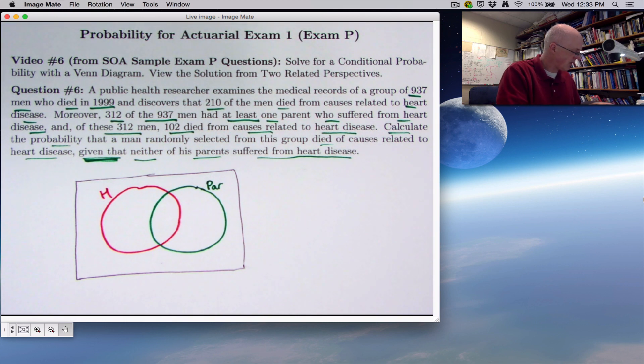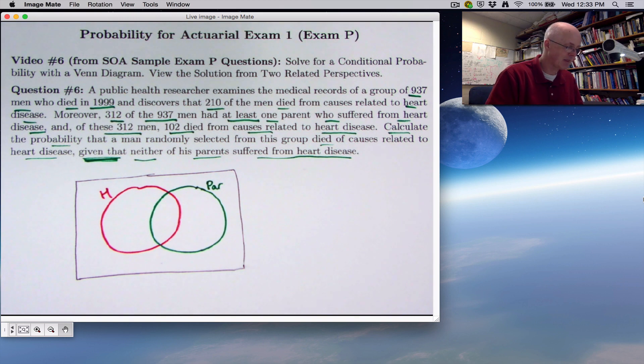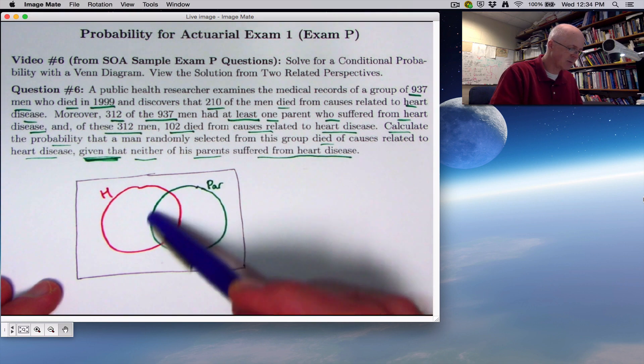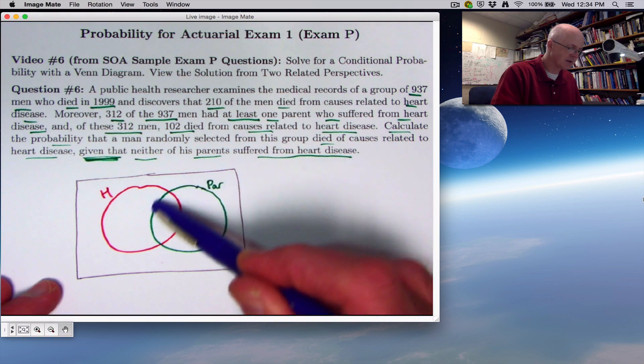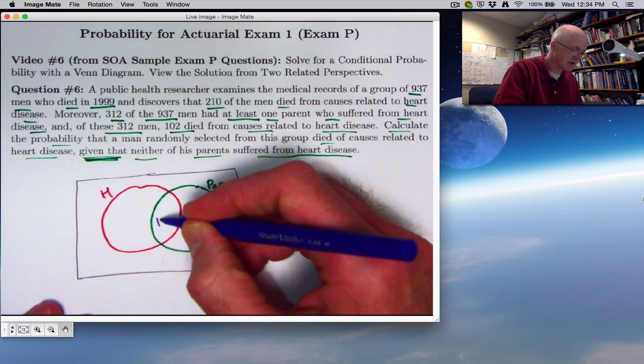Whereas before I've typically filled in the numbers to be probabilities, it seems more natural in this problem to label them with actual numbers of men. Okay, take it step by step. There's 210 men in the red circle. 312 men in the green circle. And of those 312, 102 died from heart disease. So put 102 in the intersection here.